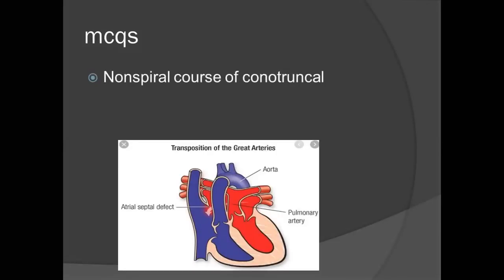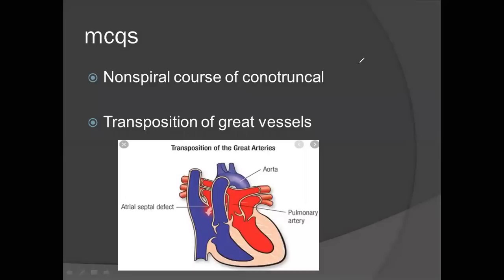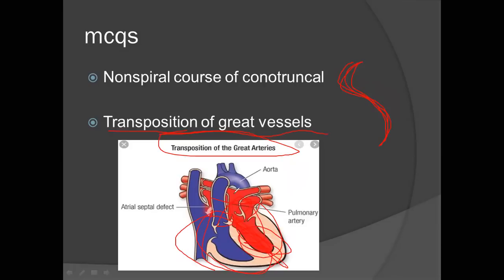Non-spiral conotruncal — this MCQ means that if the normal spiraling of the conotruncal septum does not occur, transposition of great arteries results. The spiraling brings the aorta and pulmonary trunk to their correct positions. If it doesn't spiral, the aorta comes out of the right ventricle and the pulmonary artery out of the left ventricle. This is a clinical MCQ from your book — read it carefully.